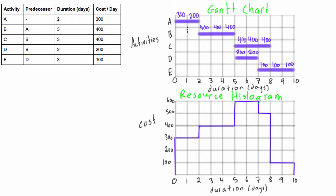Then what we do when we drew the resource histogram is we figured out, well, look, these first two days there's only one activity happening and that activity costs $300 per day, so our resource histogram for day one, we're going to spend $300 for day one, we're going to spend $300 on day two.